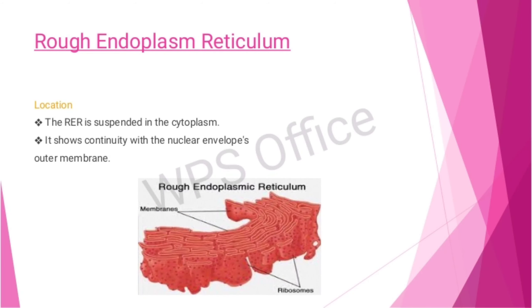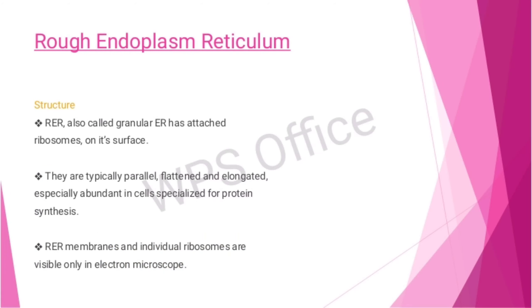The rough endoplasmic reticulum is suspended in the cytoplasm and shows continuity with the nuclear envelope's outer membrane. Structurally, it has attached ribosomes on its surface and is typically parallel, flattened, and elongated. It is especially abundant in cells specialized for protein synthesis. The rough endoplasmic reticulum membranes and individual ribosomes are visible only under the electron microscope.